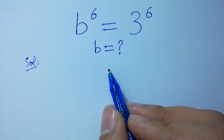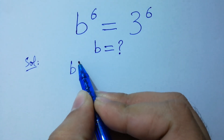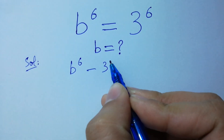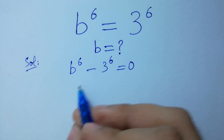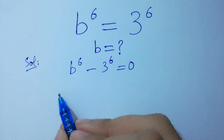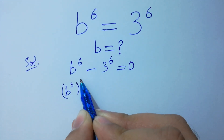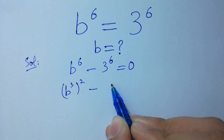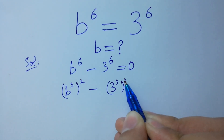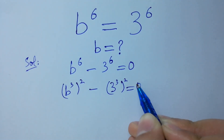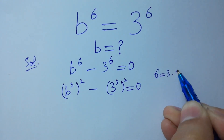This problem can be written as B to the power 6 minus 3 to the power 6 equal to 0, which is the same as B to the power 3, to the whole power 2, minus 3 to the power 3, to the whole power 2, equal to 0, since 6 equals 3 times 2.